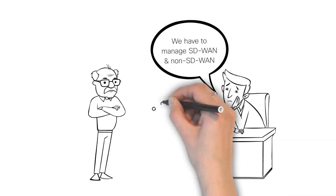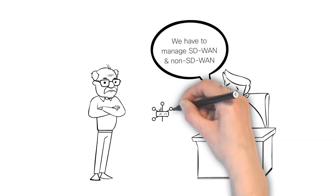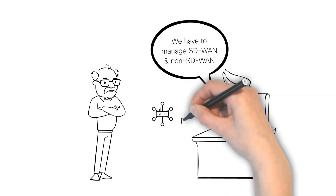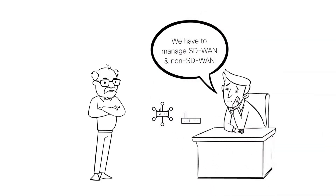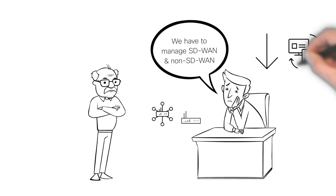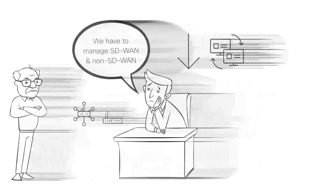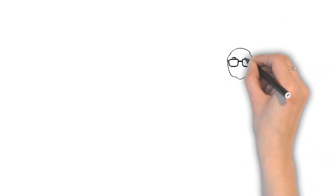Bob has a dilemma. One part of the network is on SD-WAN and another part of the network must keep their devices running traditional routing in non-SD-WAN mode. But he would like to reduce overall troubleshooting time as well as the number of tools used in the process.